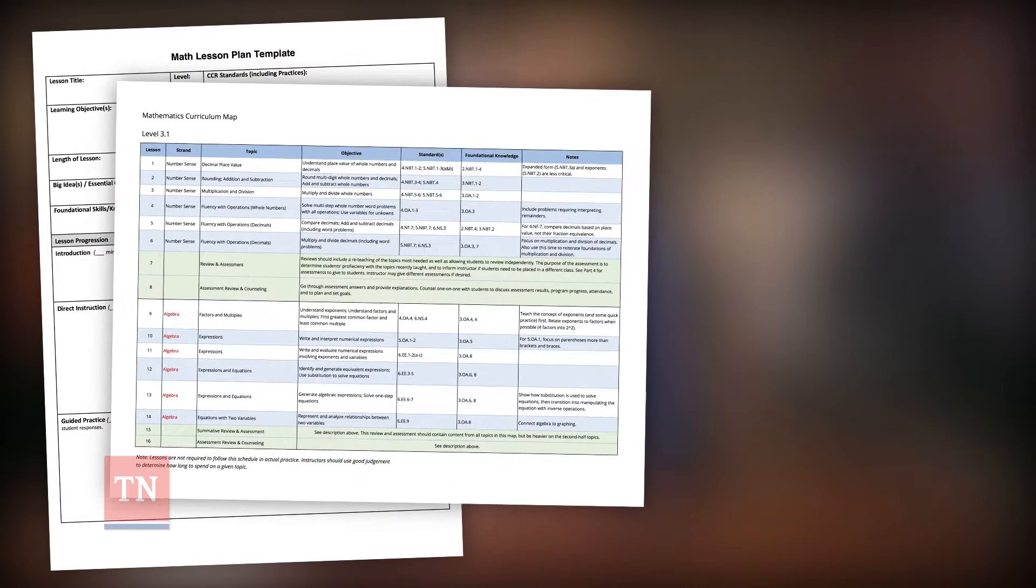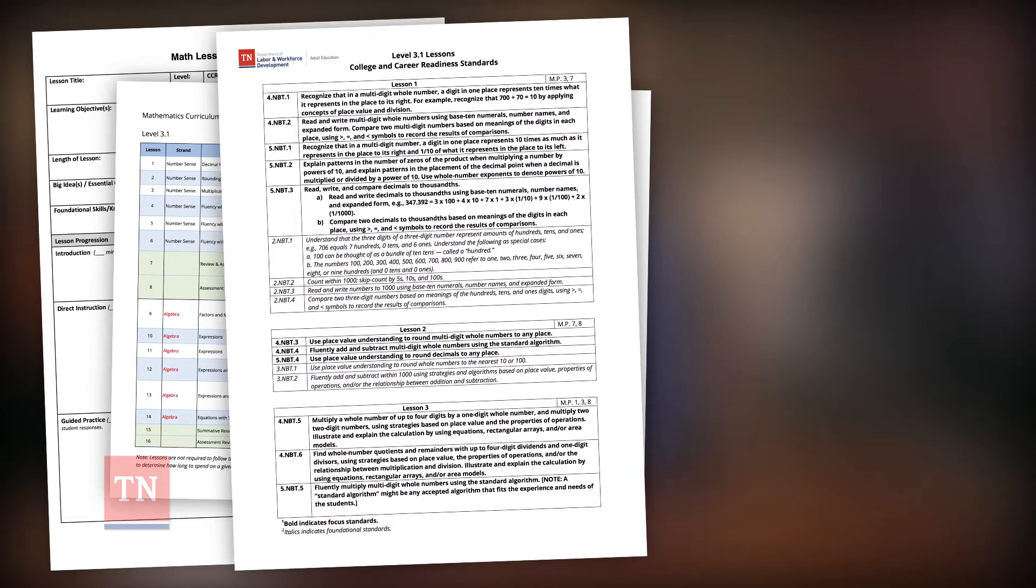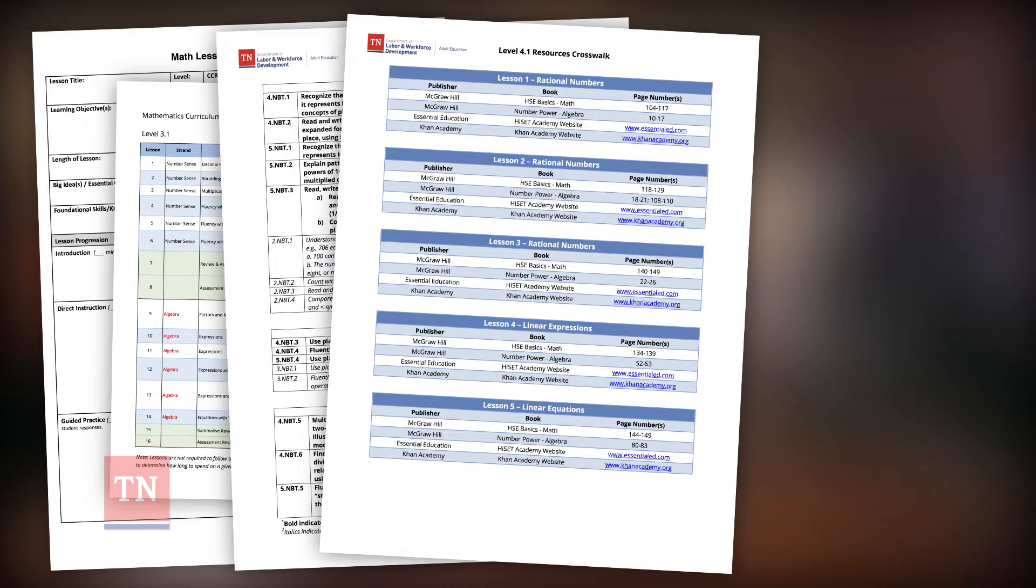Now, let's look at the different aspects of this map and the support pieces that go with it. The math lesson plan template, which guides us through the elements of a lesson. The map itself, which is the scope and sequence of topics and objectives to teach for each level. The standards, which correspond to each lesson. The crosswalk, which connects specific resources to each lesson. All of these together make planning lessons easy.